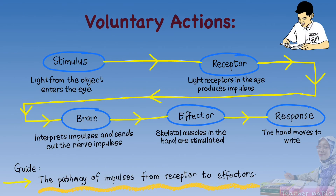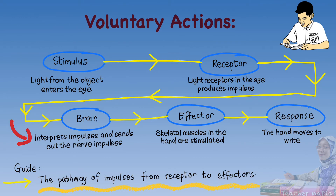Let's look at the pathway of impulses for voluntary actions. For example, the stimulus is the light from an object entering the eye. The light receptors in the eye produce impulses and send them to the brain. The brain then interprets the impulses and sends out nerve impulses to the effector. The effector, which is the skeletal muscles in the hand, is then stimulated and produces a response where the hand moves to the right.